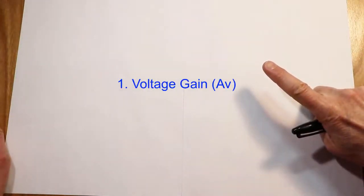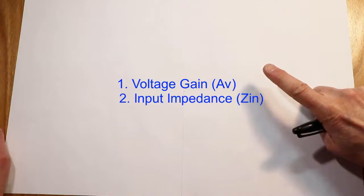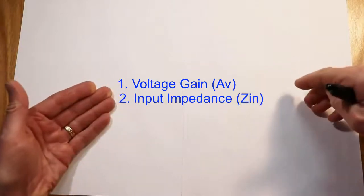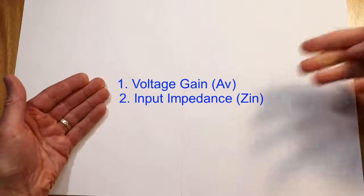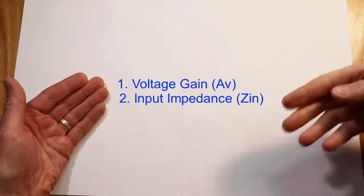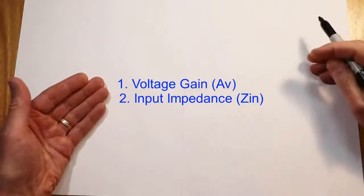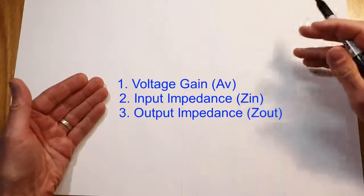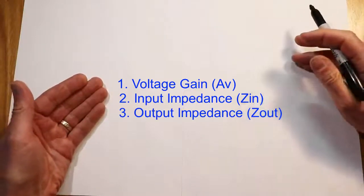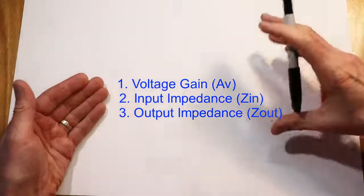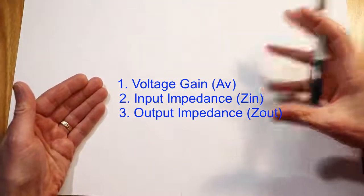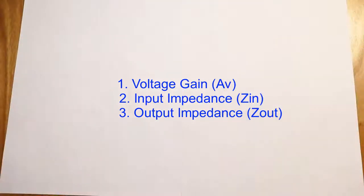Second one: the input impedance — in other words, what does this amplifier present as a load to some driving source, like a microphone, for example. And thirdly, its output impedance — in other words, what does the load see as far as the impedance that drives it?